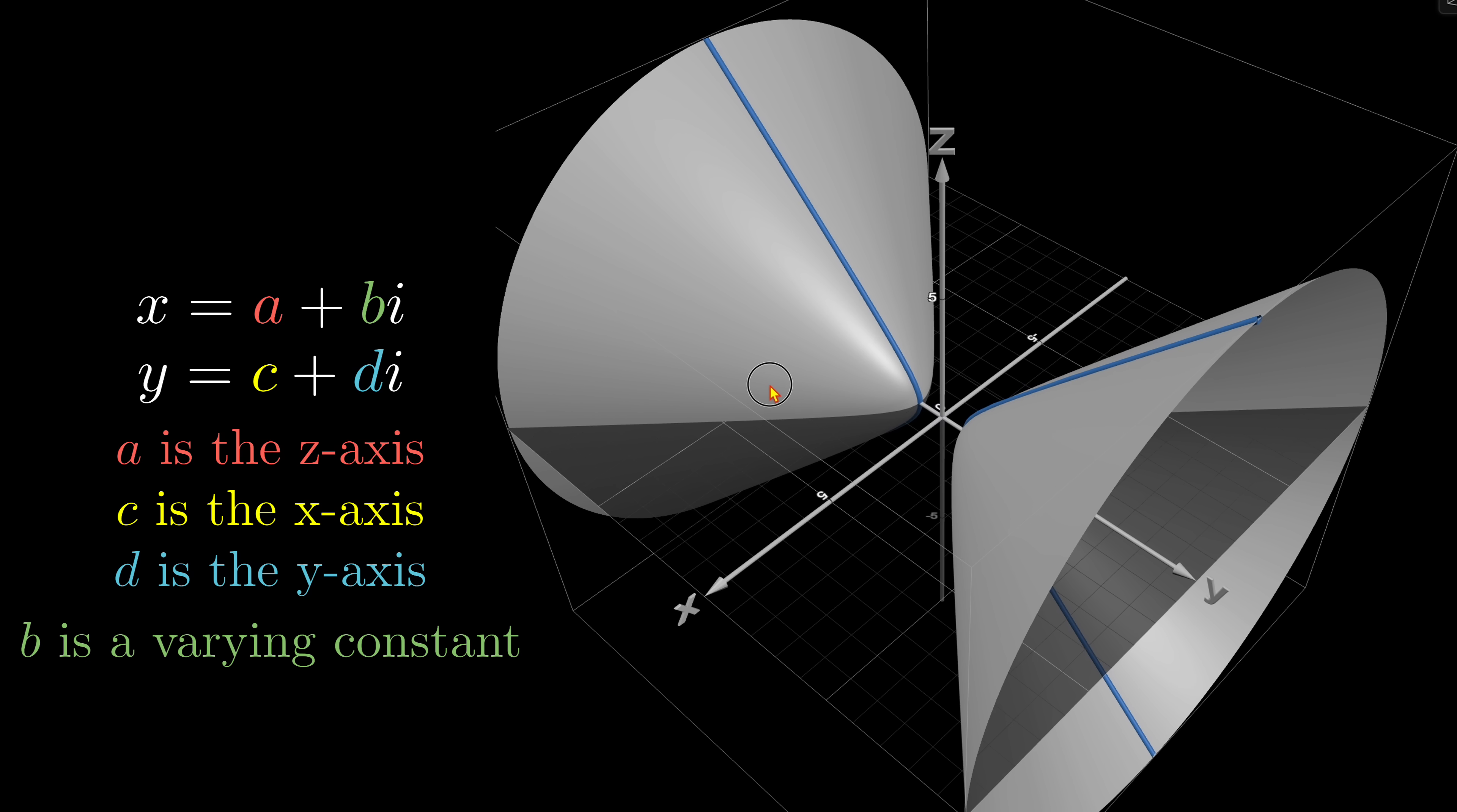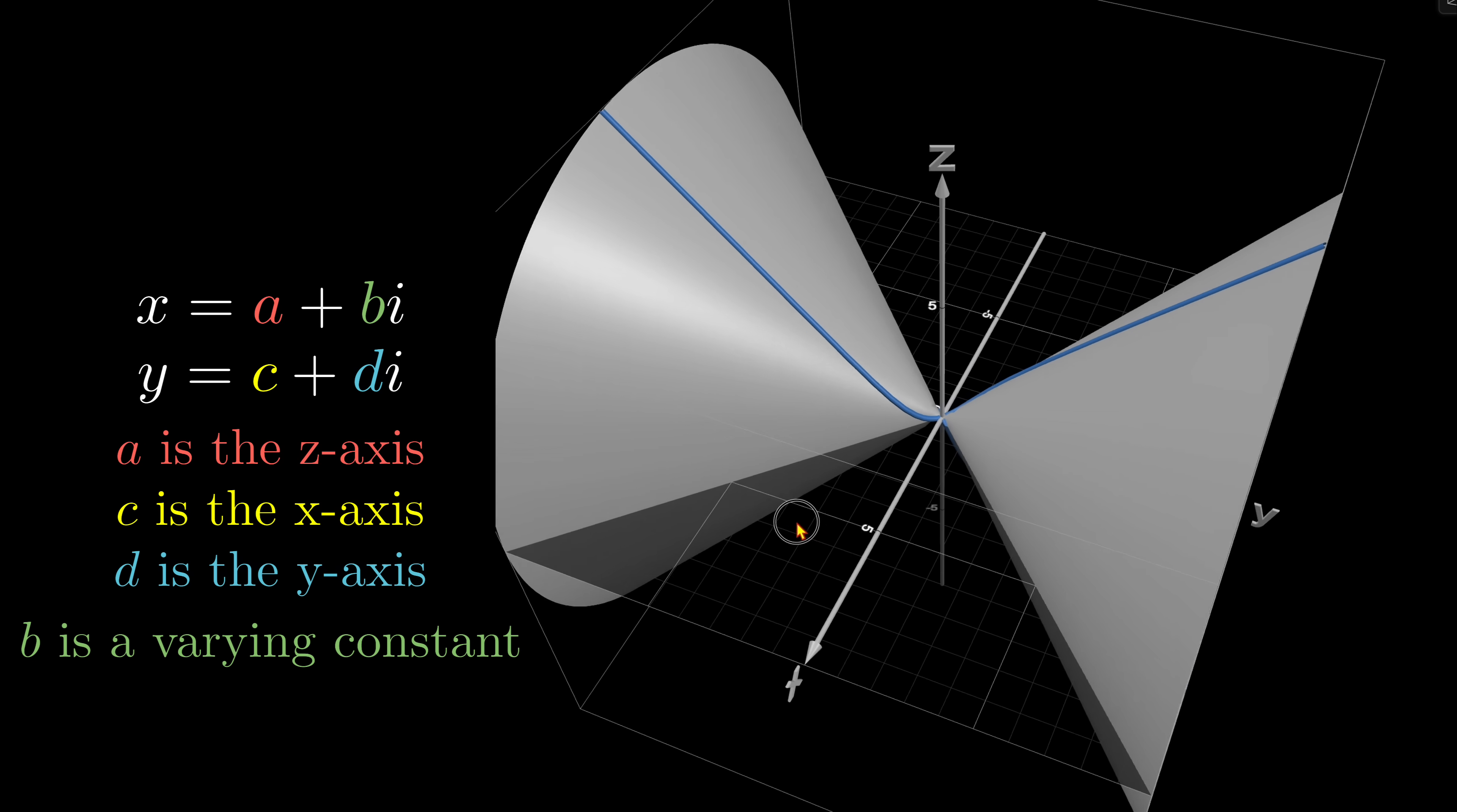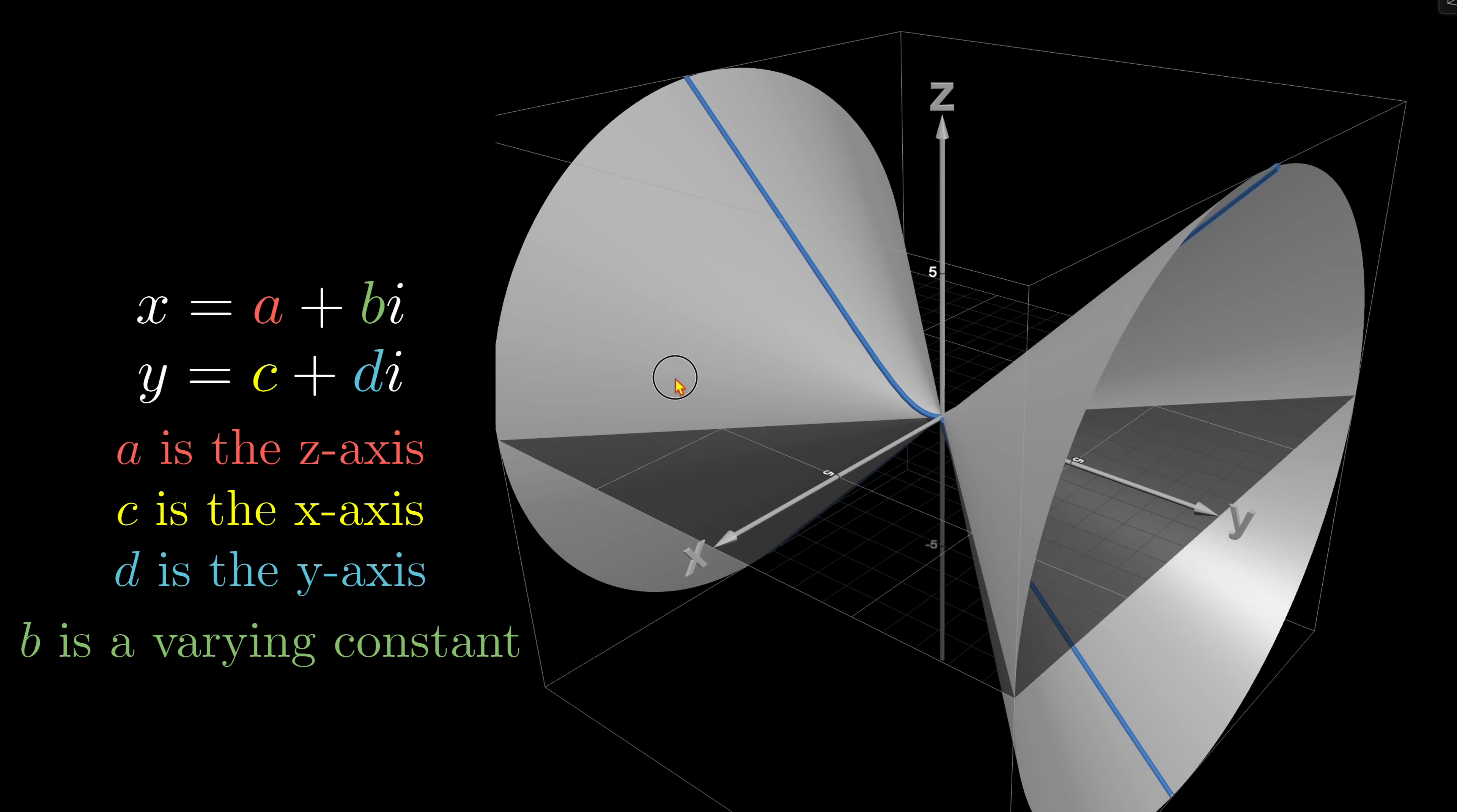Complex numbers are crazy. This surely doesn't look like a circle. Please remember, this is not the actual 4D structure. This is a projection onto 3D space. So you have to keep varying b in order to see the slice of this 4D structure.